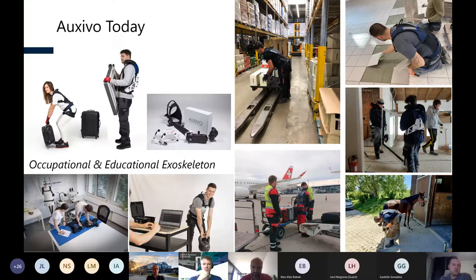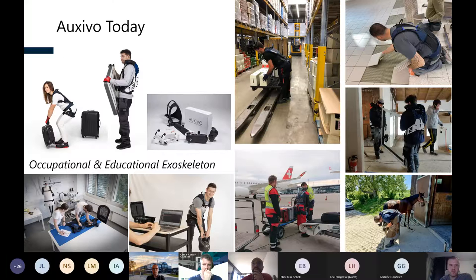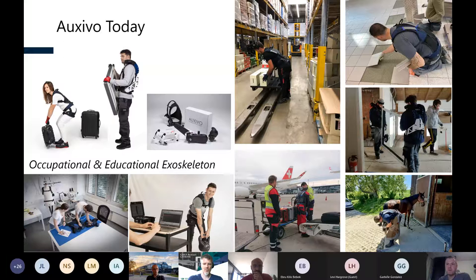Where we are today: our two systems are a lift support device and a carry support device. We also have two educational exoskeletons on the market. We do all research and development ourselves at OXIVO. Very importantly, we have a biomechanics lab in-house to measure the effect our devices have on the human user — critical for developing exoskeletons that support the user. Our devices are now used across many different industries worldwide: logistics, warehousing, airport logistics, construction companies. My very favorite use case is a blacksmith shoeing a horse while using one of our exoskeletons to reduce the high load on his back.